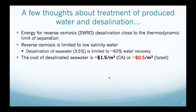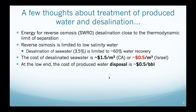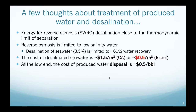There are 6.3 barrels per cubic meter, meaning produced water disposal costs more than $3.50 per cubic meter. Disposal is chosen because it's the cheapest option. We have a very wide gap to close to bring treatment of produced water to the level of seawater desalination — this is a challenge that needs a solution.